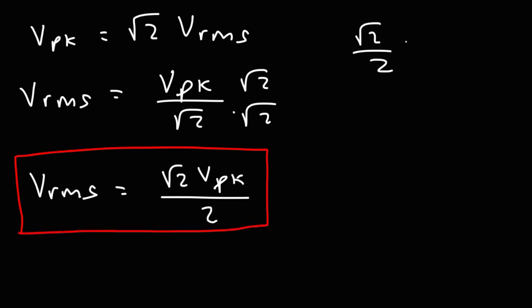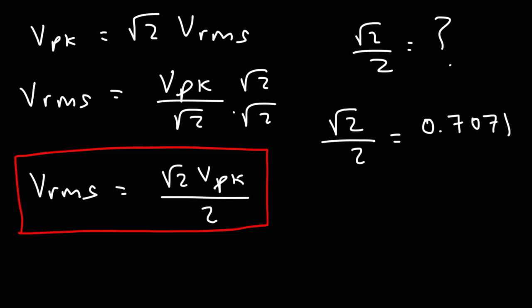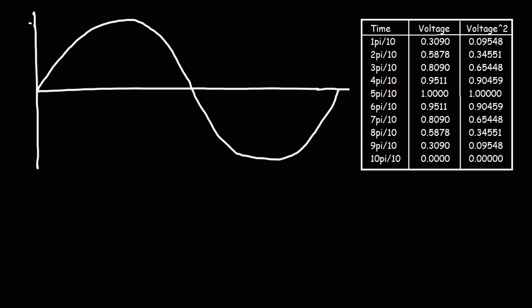But where does this number come from — the square root of 2 over 2? We're going to talk about that shortly. The decimal value of the square root of 2 over 2 is approximately 0.7071. We're going to talk about how we can get this value. So here we have an AC sine wave with a peak voltage of 1 volt. That means the RMS voltage is going to be the peak voltage divided by the square root of 2, which is 1 divided by the square root of 2, giving us 0.7071.